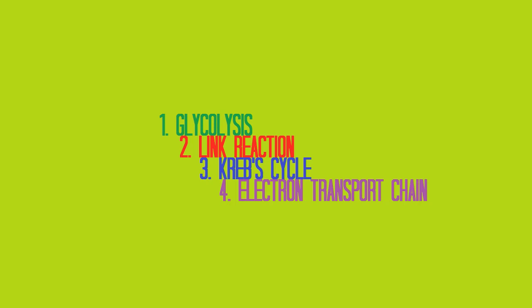Aerobic respiration occurs in four stages, the first of which is glycolysis, where the six-carbon molecule glucose is broken down into the three-carbon molecule pyruvate. The link reaction, stage number two, is the conversion of the three-carbon pyruvate into the two-carbon molecule called acetyl coenzyme A.